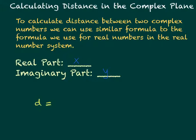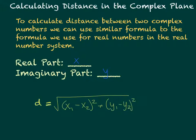So we're going to use the same variables in the same order, and it's going to help us when it comes to calculating our distance. The distance between two points will be the square root of the first X minus the second X quantity squared, plus the first Y minus the second Y quantity squared. That is the exact same distance formula as the one in the real plane, as long as we realize that our real part is our X's and our imaginary part is our Y. Other than that, it's exactly the same.